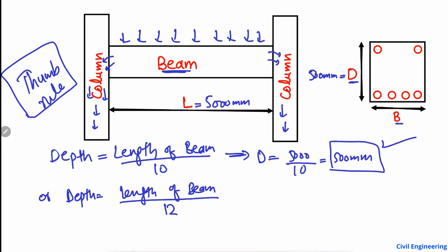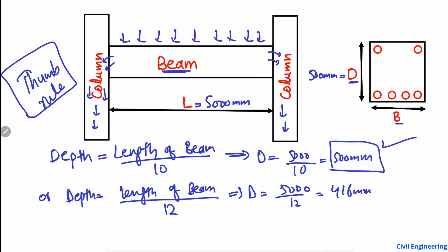Similarly, we can use the second formula: depth equals length divided by 12, so 5000 divided by 12. If we calculate it correctly, it gives us approximately 416 millimeters. This is the starting value for taking the depth of the beam and beginning your design calculations.